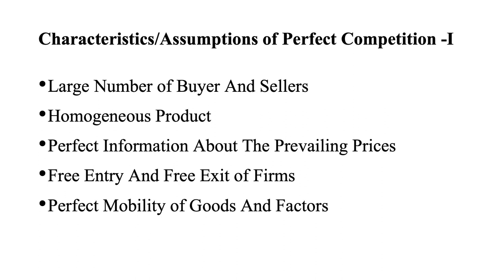Fourth, free entry and free exit of firms — there are no restrictions on entering or exiting the industry. Fifth, perfect mobility of goods and factors of production — goods and factors can move from one place to another without any restrictions. There are no government restrictions on movement, which is one of the important characteristics of perfect competition.